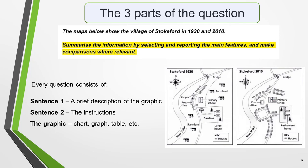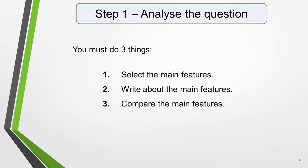The format of every Academic Task 1 question is the same. Every question consists of sentence 1, which is a brief description of the graphic, sentence 2, which is the instructions, and the graphic itself, be it a chart, a graph, a table, or a map in this instance. Sentence 2 tells you what you have to do — you must select the main features, write about the main features, and compare the main features. You do not have to write about everything. Just pick out two or three key features and you'll have plenty to write about.